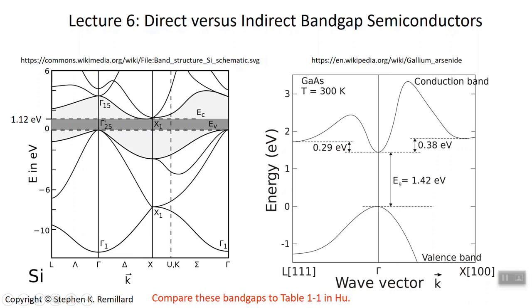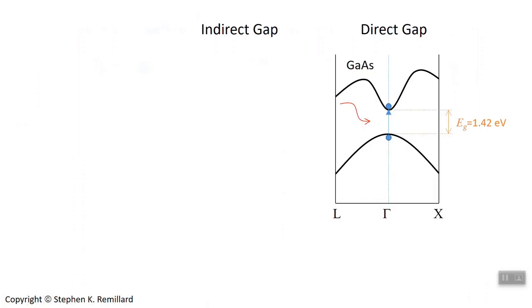For gallium arsenide on the right, it has its minimum at the gamma point. For silicon on the left, it has its minimum closer to the X point at the edge of the Brillouin zone. That's the difference between a direct and an indirect bandgap. Silicon is indirect. Gallium arsenide is direct.